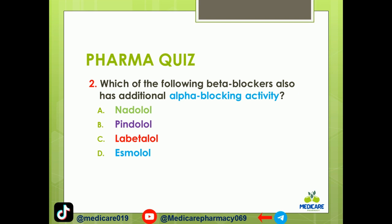Number two: which of the following beta blockers also has additional alpha blocking activity? A. Nadolol. B. Pindolol. C. Labetalol. D. Smolol. The answer is C. Labetalol has both beta and alpha blocking activity.